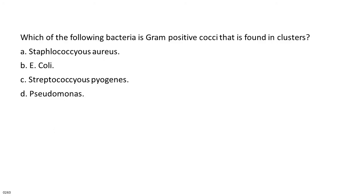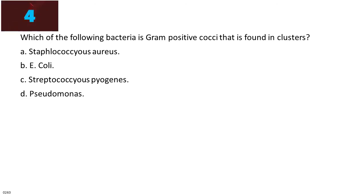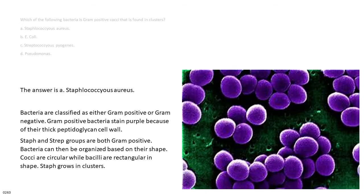Which of the following bacteria is gram-positive cocci found in clusters? A. Staphylococcus aureus. B. E. coli. C. Streptococcus pyogenes. D. Pseudomonas. The answer is A. Staphylococcus aureus. Bacteria are classified as either gram-positive or gram-negative. Gram-positive bacteria stain purple because of their thick peptidoglycan cell wall. Staph and strep groups are both gram-positive. Cocci are circular while bacilli are rectangular in shape. Staph grows in clusters.